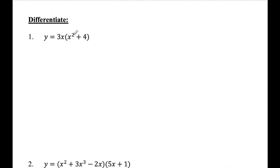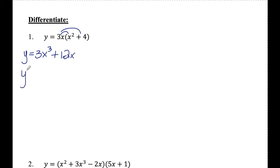For example number one, I could definitely just multiply the 3x inside the parentheses and end up with 3x cubed plus 12x, then use the power rule. So using the power rule, I have 9x squared plus 12. This is definitely the faster method of finding the derivative for this function.